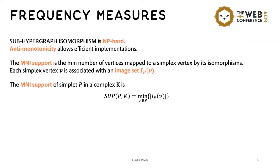And among these anti-monotonic measures, we have that the MNI support is also efficient to compute. This measure is defined as the minimum number of vertices that can be mapped to a simplet vertex.